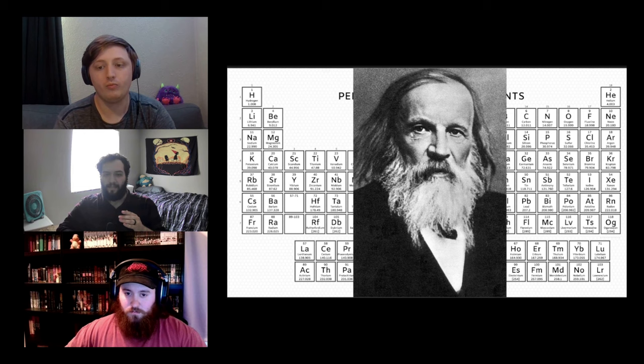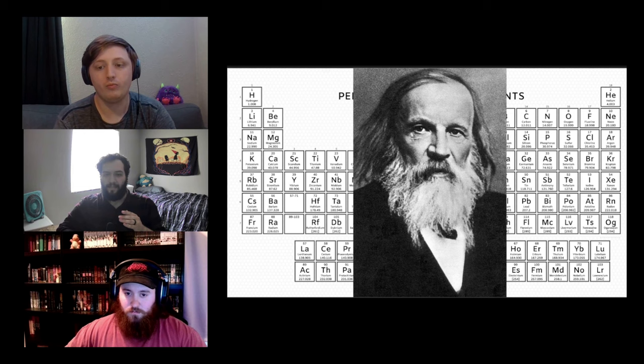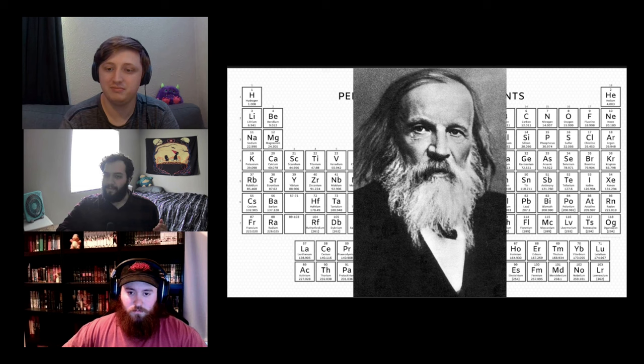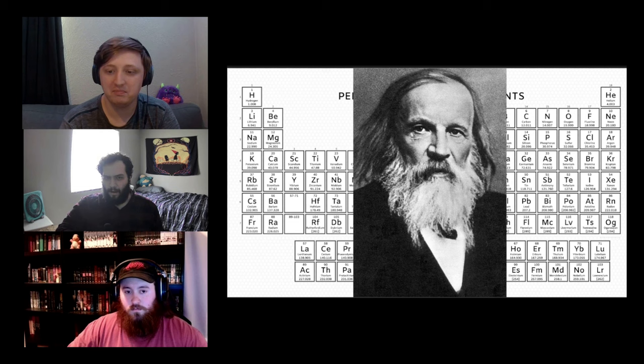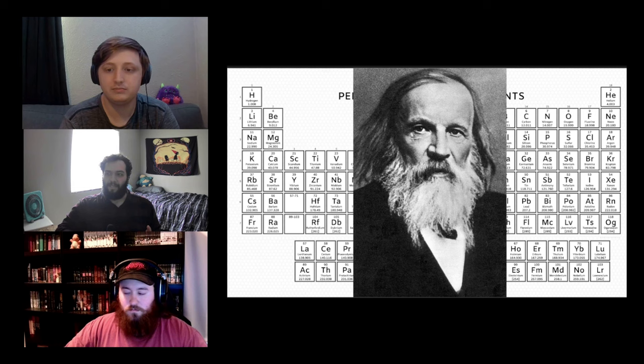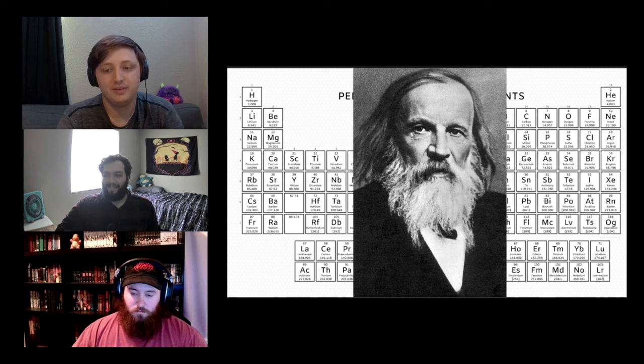He noticed that if you laid out the elements in order of weight, they kind of circle back, and some elements have similar properties — silicon acts a lot like carbon, but a little different. That's why it's called the periodic table: there's periodicity. He had this almost spiritual belief in the organization of the universe, that following this pattern to its extreme would guide him to some truth about reality.